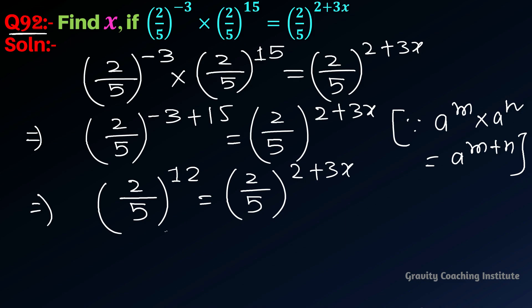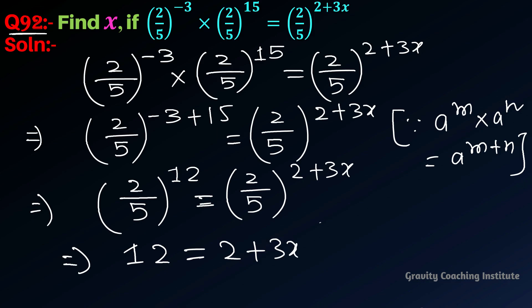Here, the bases of both sides are the same. So their exponents must be equal. Therefore, 12 equals 2 plus 3x.